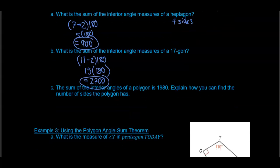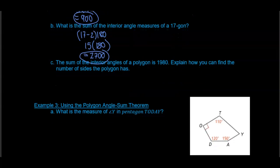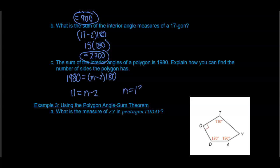Now we're going to work backwards. The sum of the interior angles of a polygon is 1,980. How can you find the number of sides? We're going to use the formula: 1,980 equals (n minus 2) times 180. We can divide both sides by 180, which gives us 11, and that equals n minus 2. Adding 2 to both sides, n equals 13. So we have a 13-sided figure.